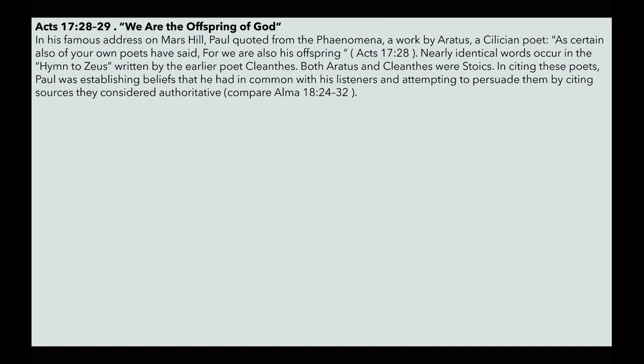Acts 17:28–29: we are the offspring of God. In his famous address on Mars Hill, Paul quoted from the Phaenomena, a work by Aratus, a Sicilian poet—'for we are also his offspring.' Nearly identical words occurred in the hymn of Zeus written by the early poet Cleanthes. Both Aratus and Cleanthes were Stoics, and by citing these poets Paul was establishing beliefs he had in common with his listeners, attempting to persuade them by citing sources they considered authoritative. A good method of missionary work is meeting people on common ground and on common beliefs that we share.